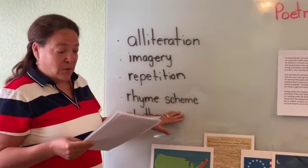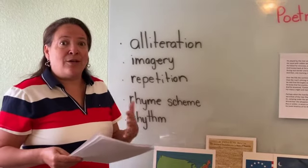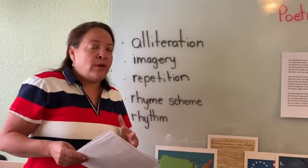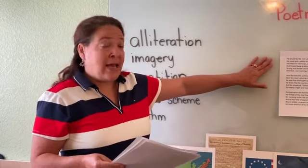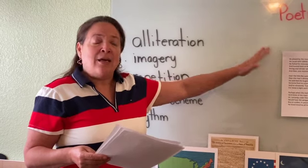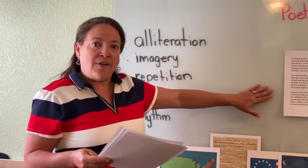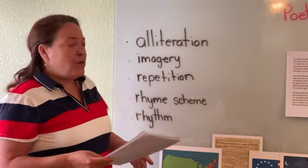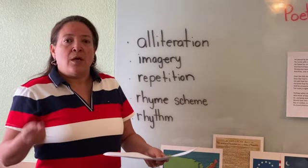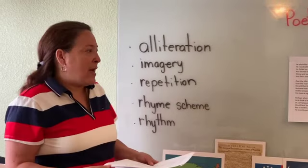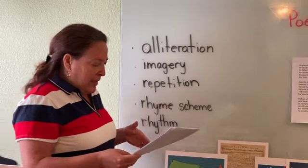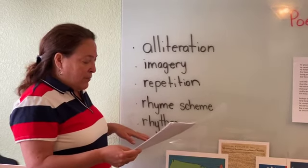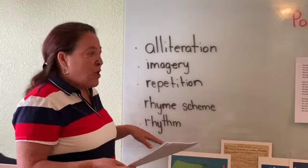Rhyme scheme — this is a fun one, boys and girls. The rhyme scheme is the pattern of the poem. Now we learn poems A, B, A, B, but this poem actually has A, A, B, B. So I'll teach you how to identify the rhyme scheme. And then also the rhythm, boys and girls. Can you get a cadence? Can you get a rhythm as you read the poem? I'm going to read it today and show you the cadence. It's a pattern of sound created by stressed or unstressed syllables, so you'll be able to see where we get that rhythm.